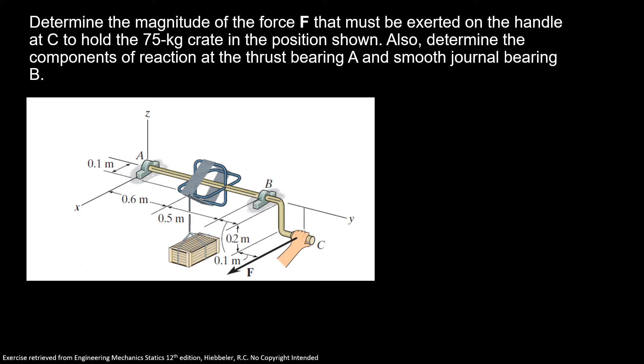First we're going to see how many reactions we have at A because of the thrust bearing. We have AX, AY, and AZ. And because we have this type of reaction at B, we have only BX and BZ. We don't have any reactions aligned with the Y-axis.